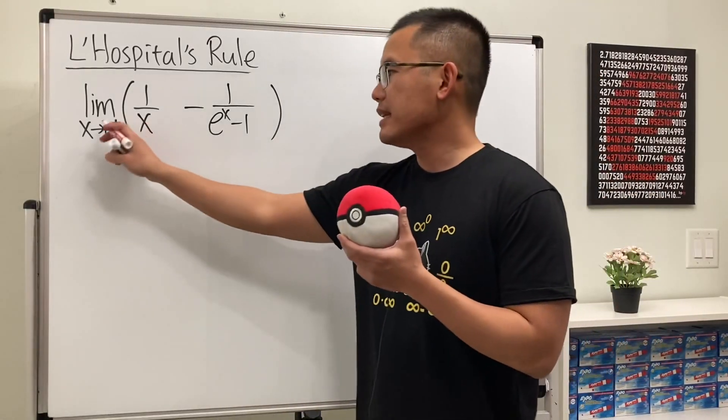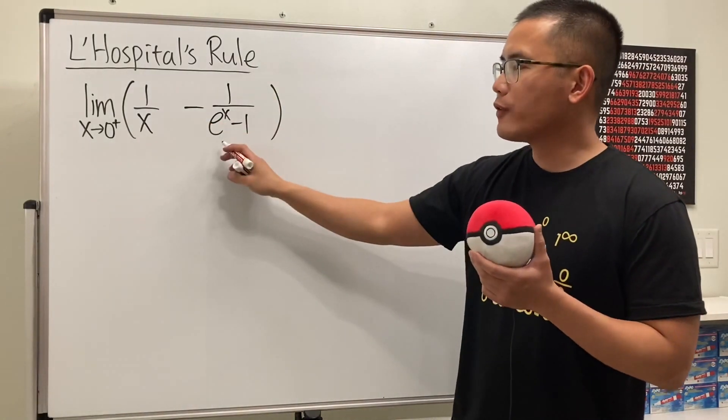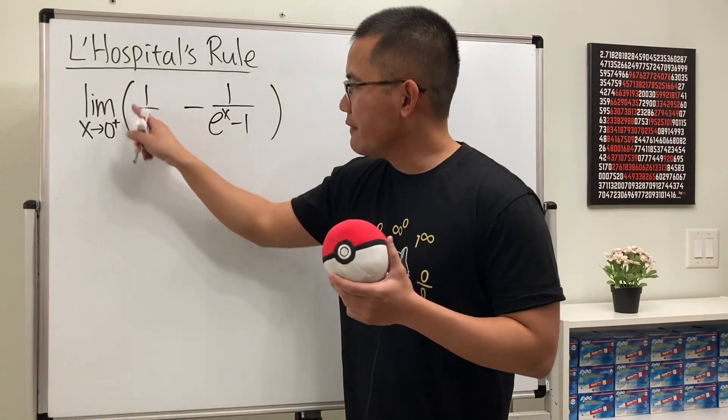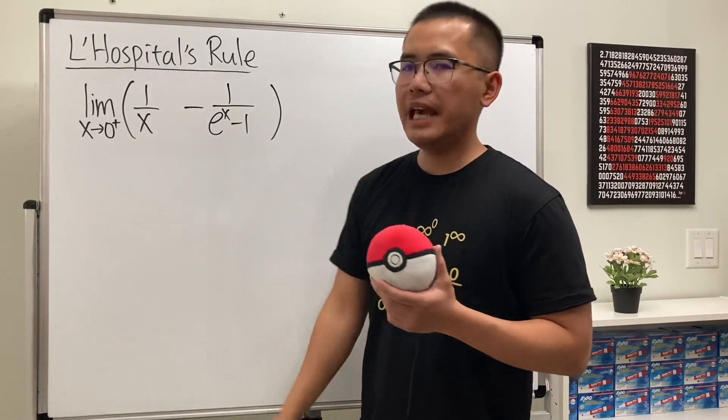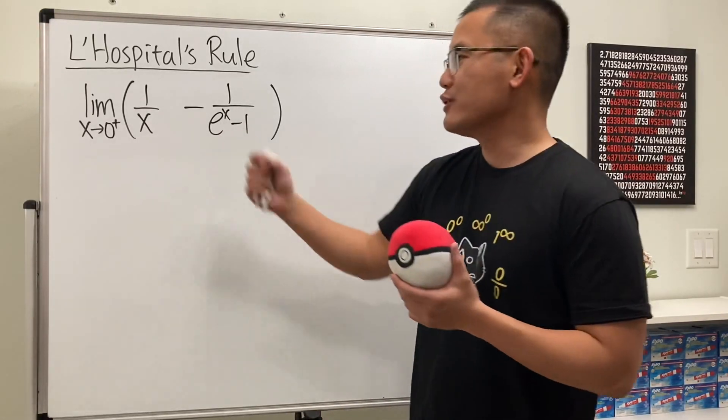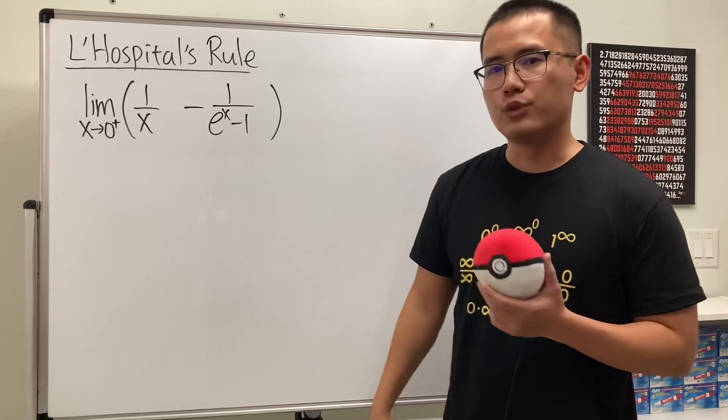All right, here we have the limit as x approaching 0 plus of 1 over x minus 1 over e to the x minus 1. This is actually going to be an infinity minus infinity case, which is indeterminate. But usually when we have fractions like this, let's just combine them, and then we'll get into the L'Hôpital-ready form.